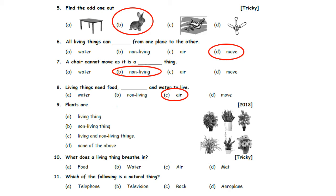Ninth one: Plants are _____. Option A: Living thing. Option B: Non-living thing. Option C: Living and Non-living thing. Option D: None of the above. Plants are living things — they can grow, make their own food, and can feel. So, Option A is the correct answer. This question was already asked in 2013 NSO SOF.